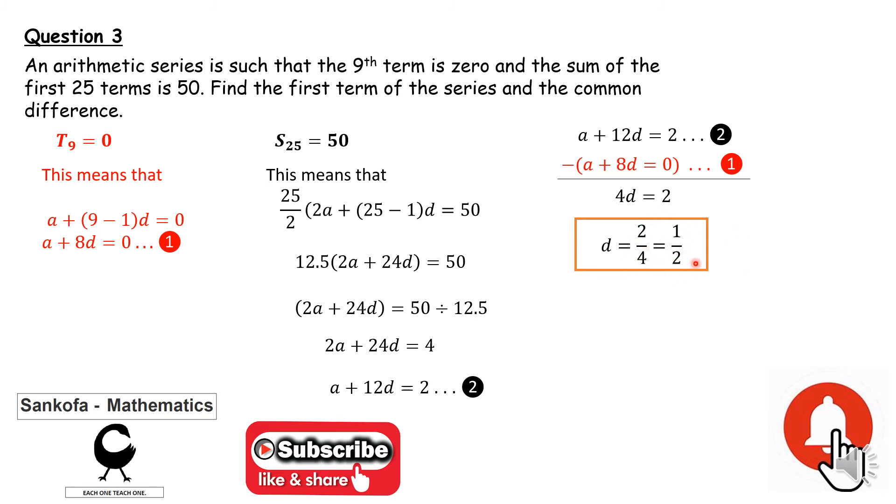Once you have one value, you take that d and substitute it in any one of the first two equations. I substitute in equation 2. A half of 12 is 6, and a will be 2 minus 6, and the value of a is negative 4.